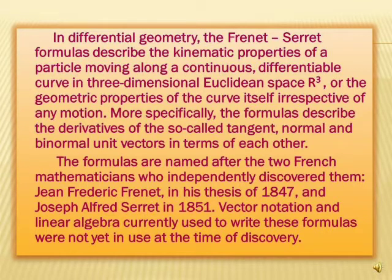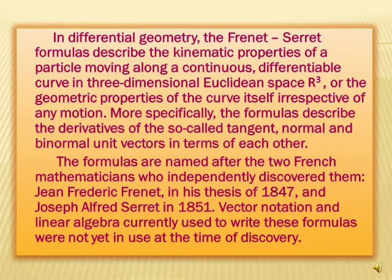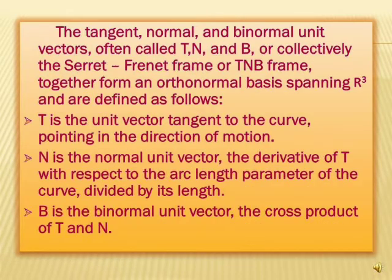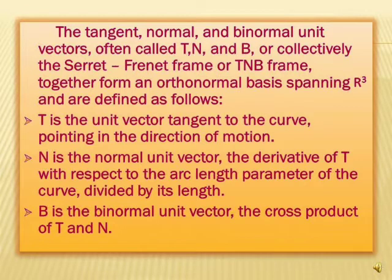Vector notation and linear algebra currently used to write these formulas were not yet in use at the time of discovery. The tangent, normal, and binormal unit vectors, often called t, n, and b, or collectively the Serret-Frenet frame or TNB frame, together form an orthonormal basis spanning R³.